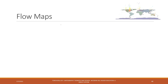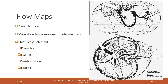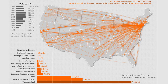And we also have the flow map, which shows the linear movement between places. Although there are some major concerns about flow maps — for example, it may have issues with projections because you have those flows that are not really distributed on the earth, and also scaling to choose the right symbols. This is an example of the flow map, and we can see how the different places are connected.